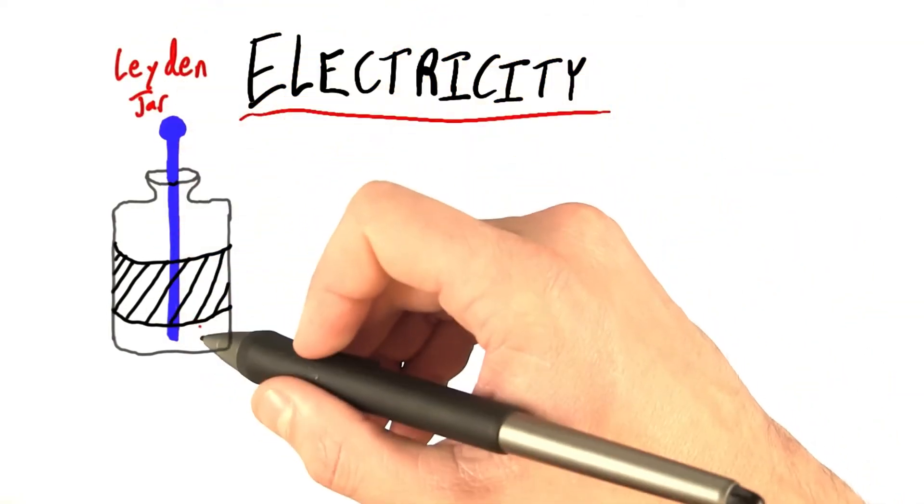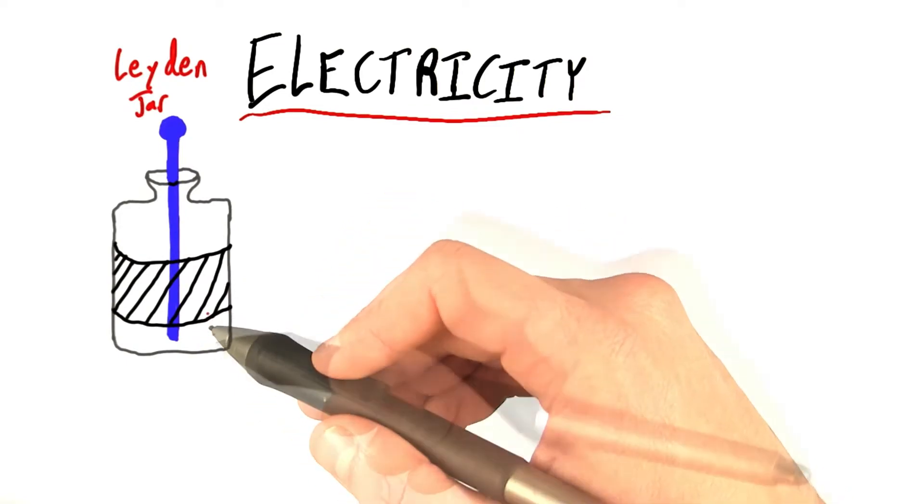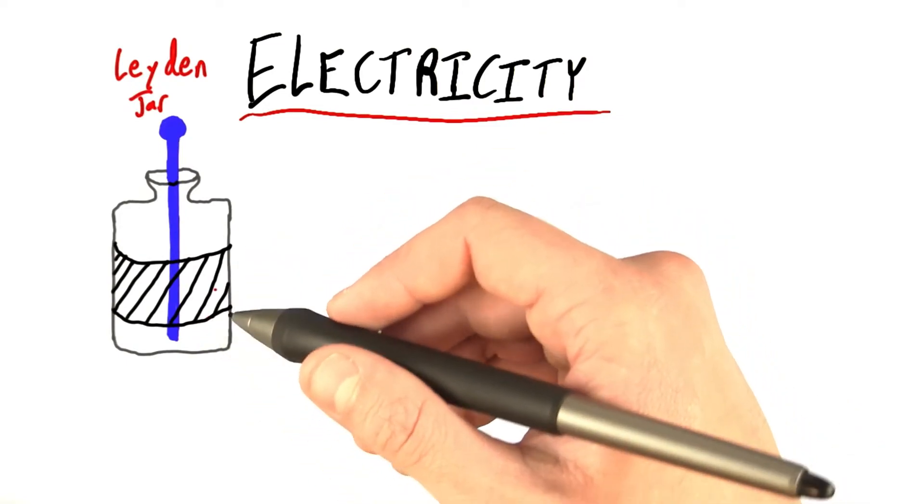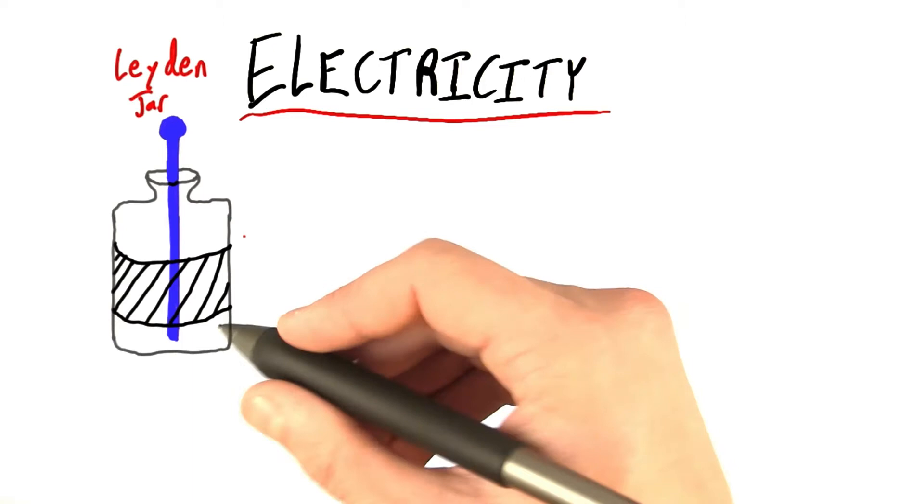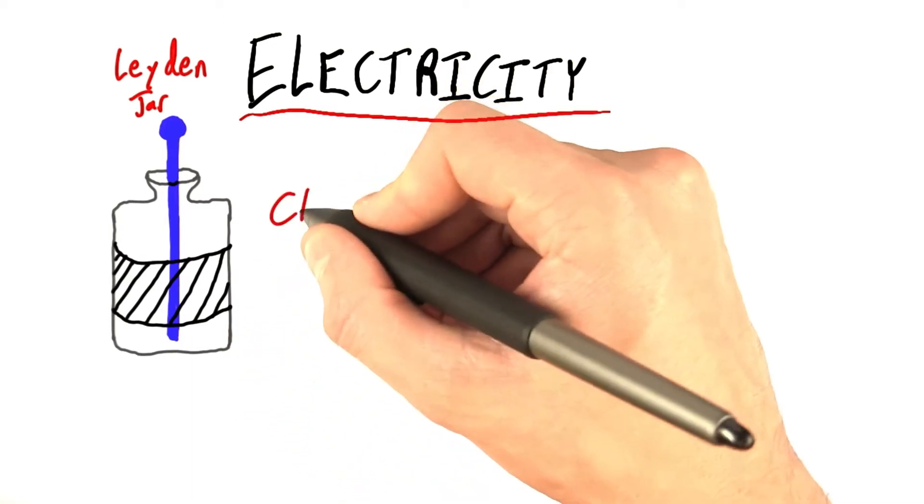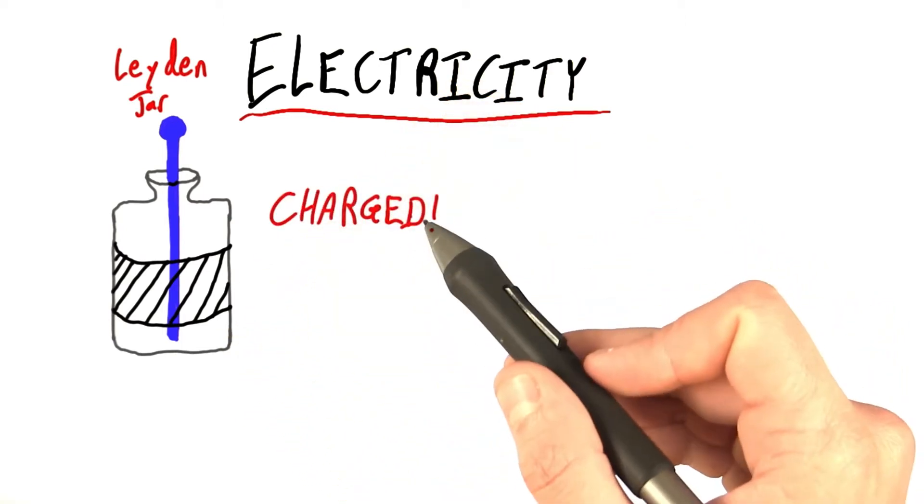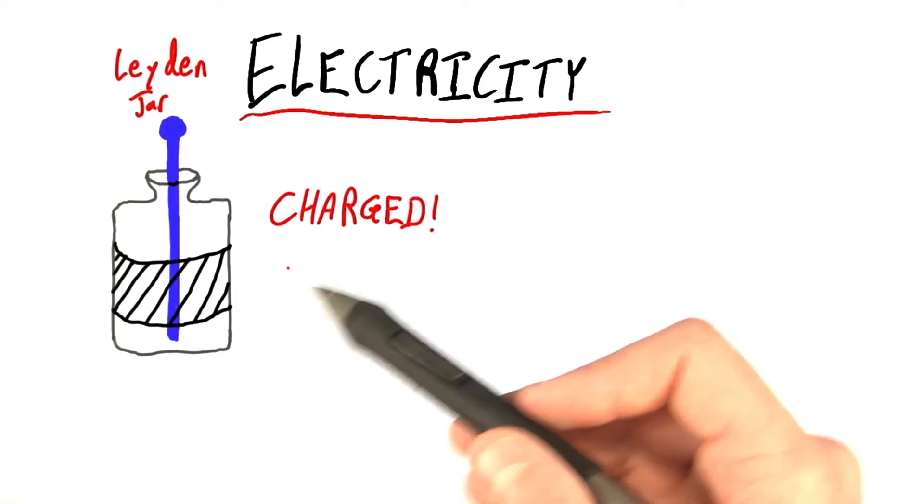We don't need to go into the details of how this jar worked just yet, but the key thing to know is that through a process which involved friction, this jar could become charged. And for now, let's say that charged means the jar possesses electricity in some way.